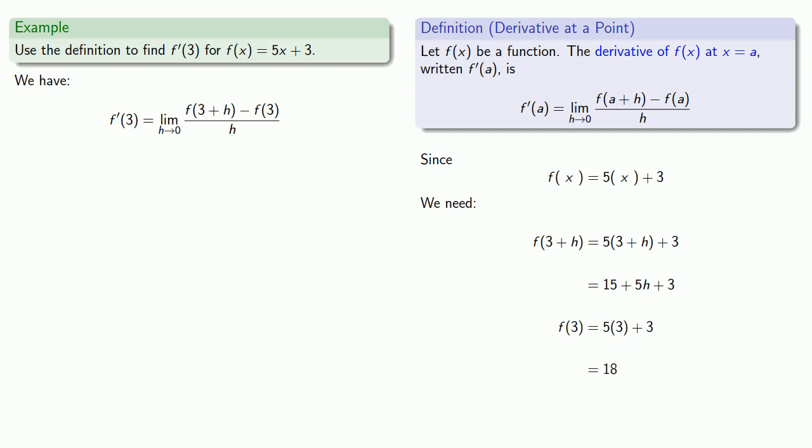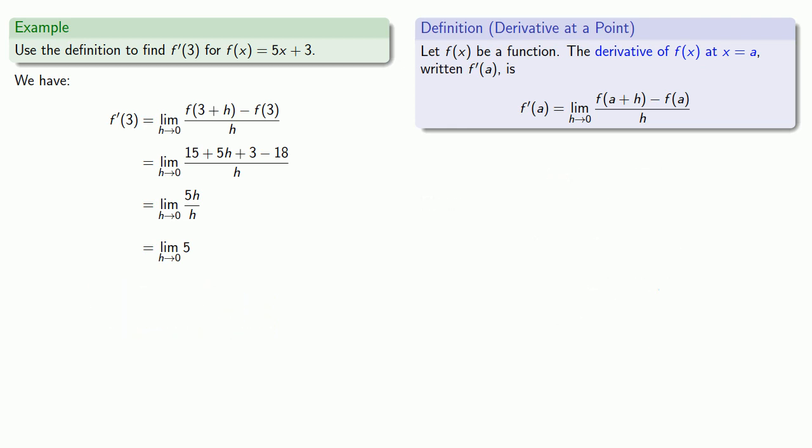So I have my definition of the derivative. I'll substitute in the values I have for f of 3 plus h and f of 3. I'll do a little bit of algebra. And finally, I get to a point where I have to do some calculus. I want to find the limit as h goes to 0 of 5. And since 5 is a constant, I know that the limit as x approaches anything of any constant is just the constant. And so my limit is going to be 5.